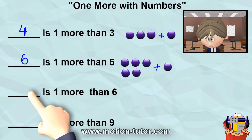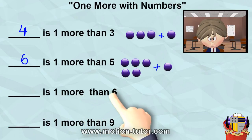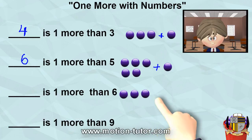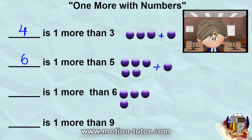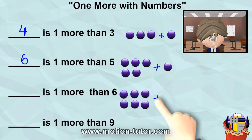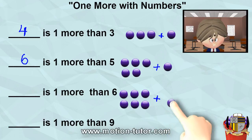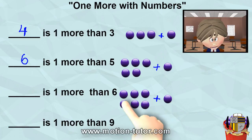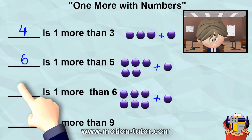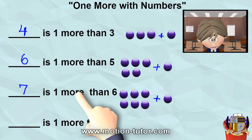Let's look at this one. Something is one more than six. I'm going to pull out six by dragging out three and three. So there's six. That plus one more is one, two, three, four, five, six, plus this one — seven. So that means seven is one more than six.